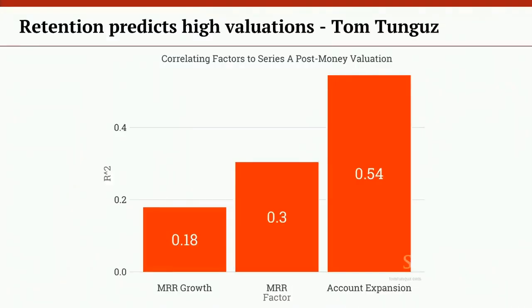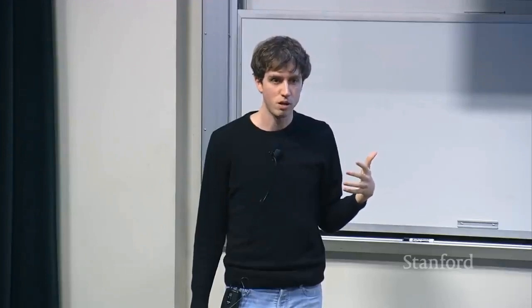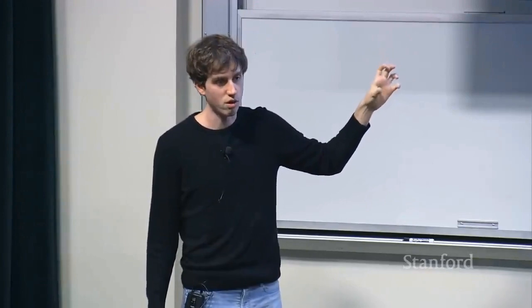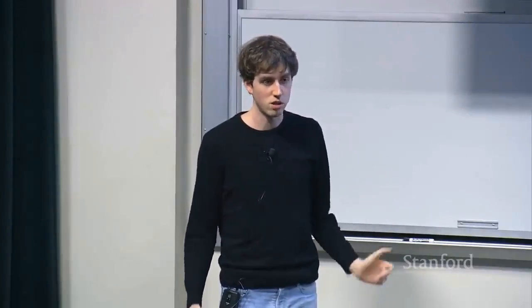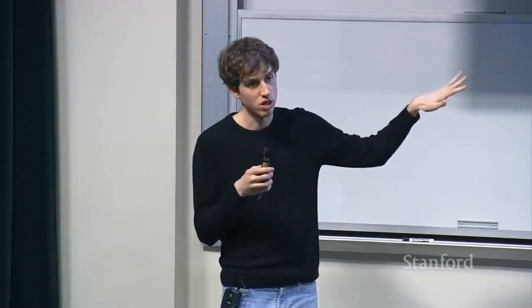Just one more data point. A venture capitalist named Tom Tungas did a study on what predicts the valuations that startups raise money at — a simple correlation study. Growth of revenue has a 0.18 correlation. Total revenue correlates a little more strongly. But by far the strongest correlation is account expansion, meaning people spending more over time — the same thing as retention increasing over time. This correlation is extremely strong at 0.54 out of 1.0, meaning there are really just two classes of companies: one where there's increasing revenue per user over time, and another class that gets totally different valuations where this is not happening.